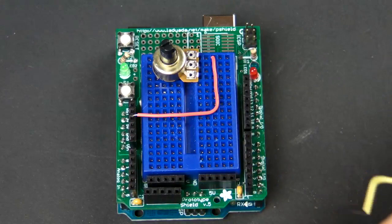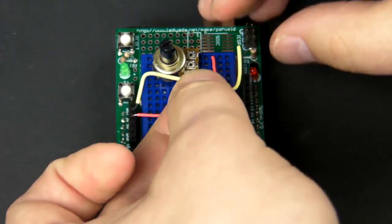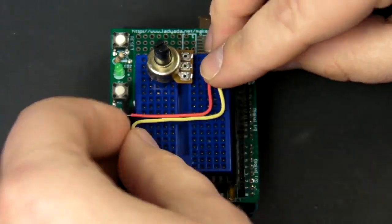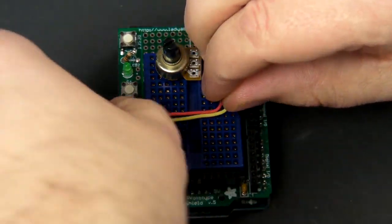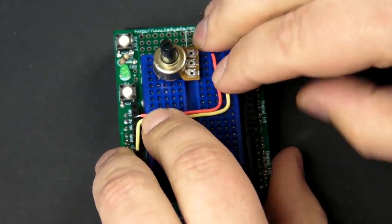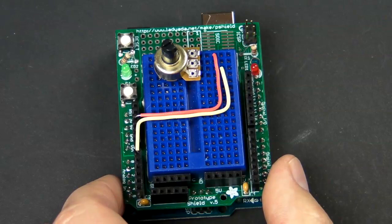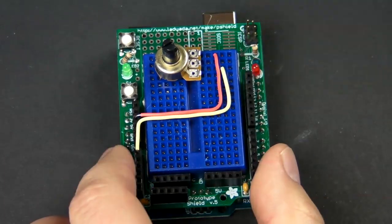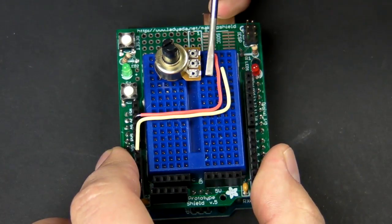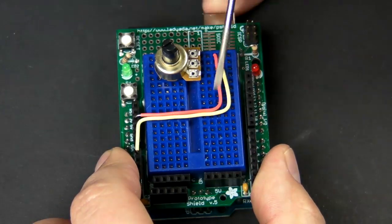And we're going to connect that to pin zero on the Arduino, which is down here. And the last one we need to connect is the ground, and that is this pin right here. So remember, all these holes on the breadboard, these rails are connected together horizontally, not vertically.